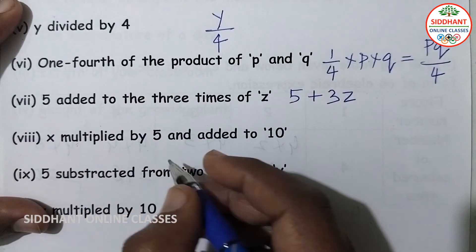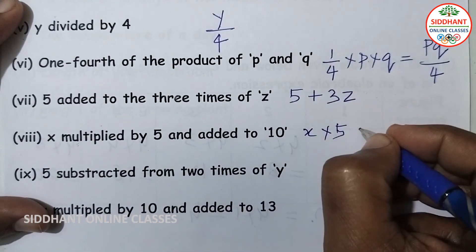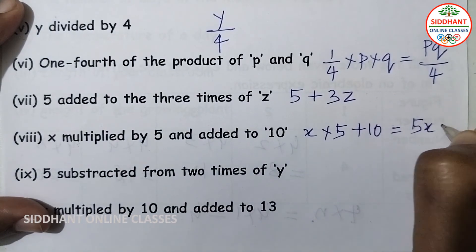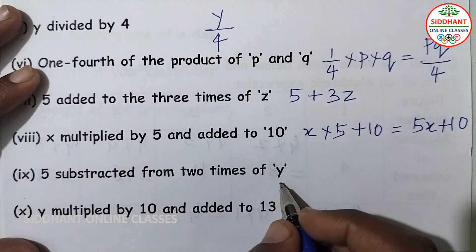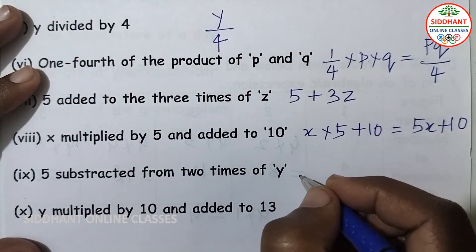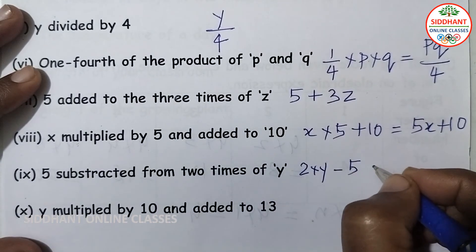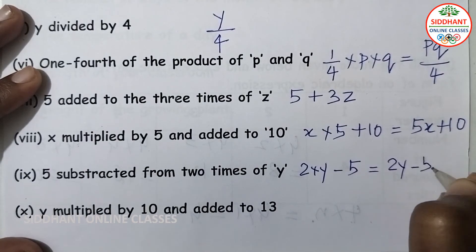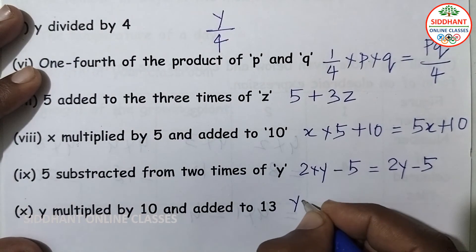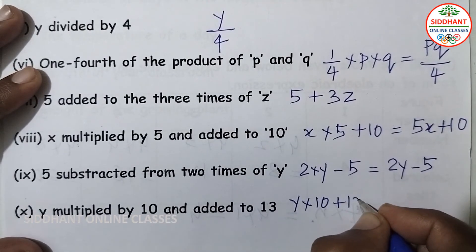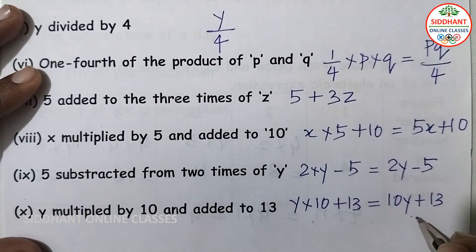Eighth, 'x multiplied by 5 and added to 10' — x into 5 plus 10, so the expression is 5x plus 10. Ninth, '5 subtracted from 2 times of y' — 2 into y minus 5, so the expression is 2y minus 5. Tenth, 'y multiplied by 10 and added to 13' gives 10y plus 13.